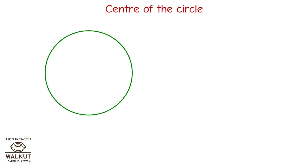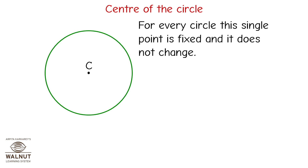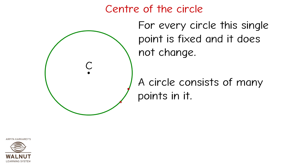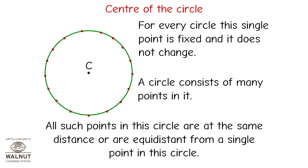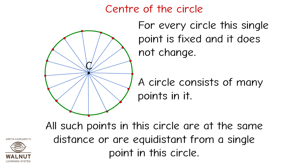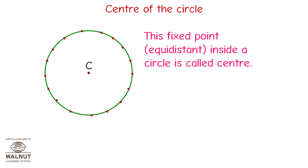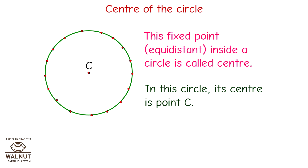Now let's look at each part in detail. For every circle, this single center point is fixed and does not change. A circle consists of many points, and all such points are at the same distance — equidistant — from a single fixed point. The distance around a circle is called its circumference. This fixed equidistant point inside a circle is called the center.